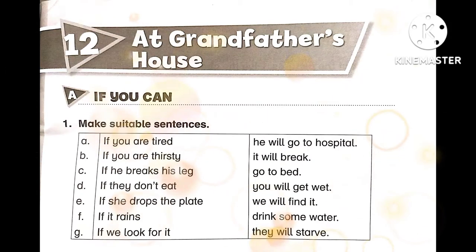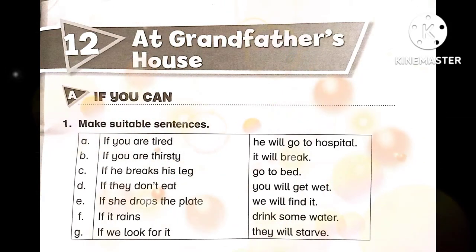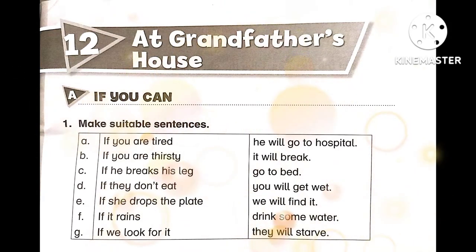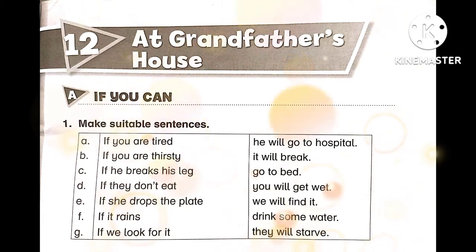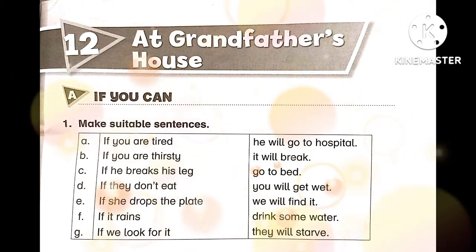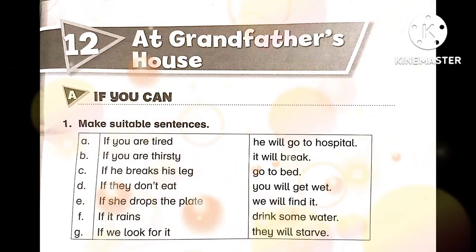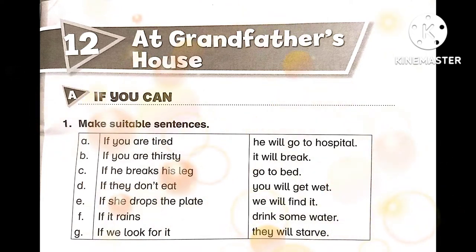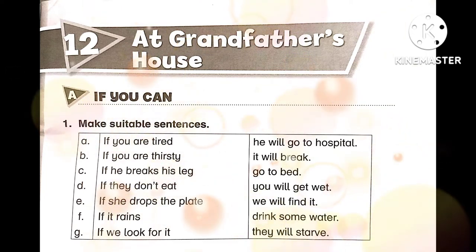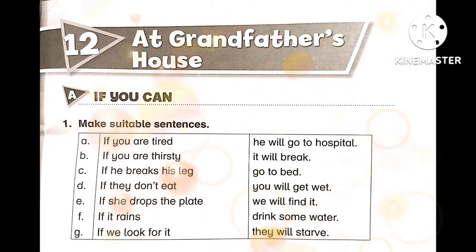The name of this chapter is 'At Grandfather's House.' The first section of the exercise is Section A. Question number one is: make suitable sentences. We have two columns given here, with almost seven sentences, and we have to join them with the correct option.